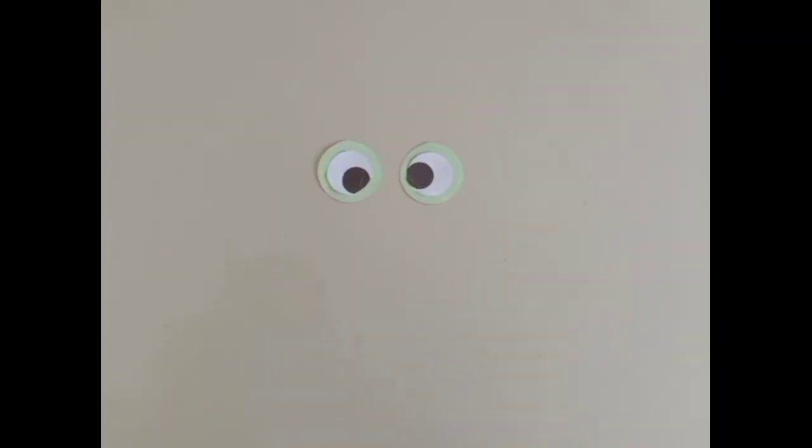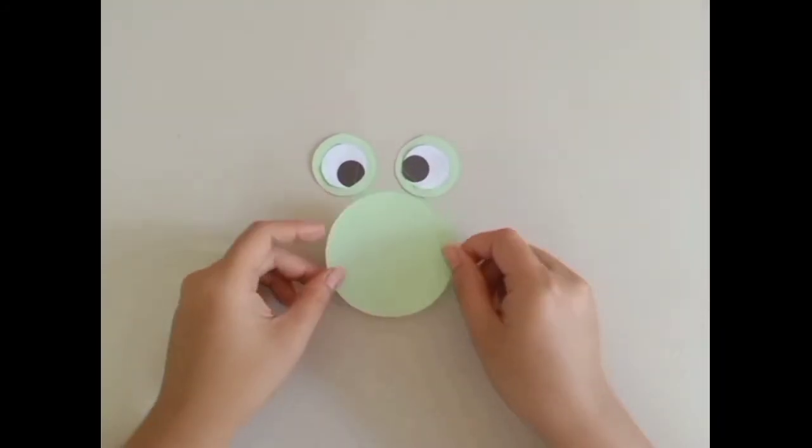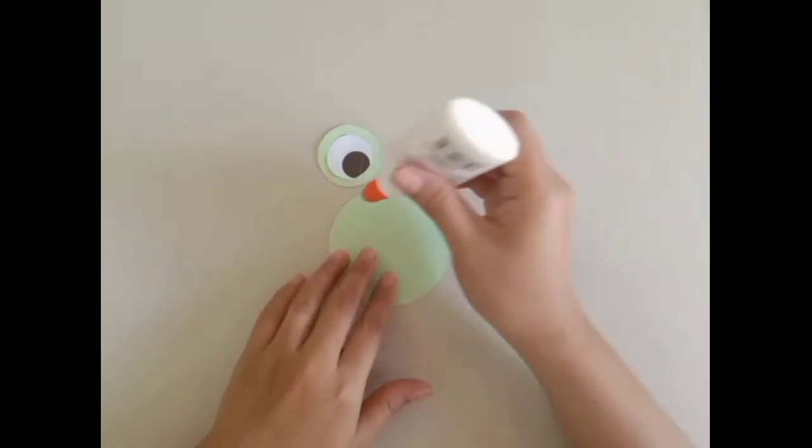Then, get the medium circle and glue the pair of eyes on the top edge of the circle.